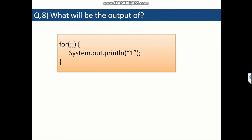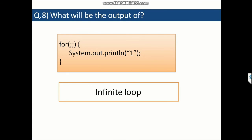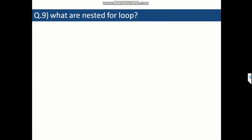The next question asks: what will be the output of a for loop written without any initialization, condition, or increment? A for loop without any condition is considered an infinite loop. In this case, 1 will be printed infinitely and the loop will never stop. If you don't mention any condition, it is an infinite loop in Java.